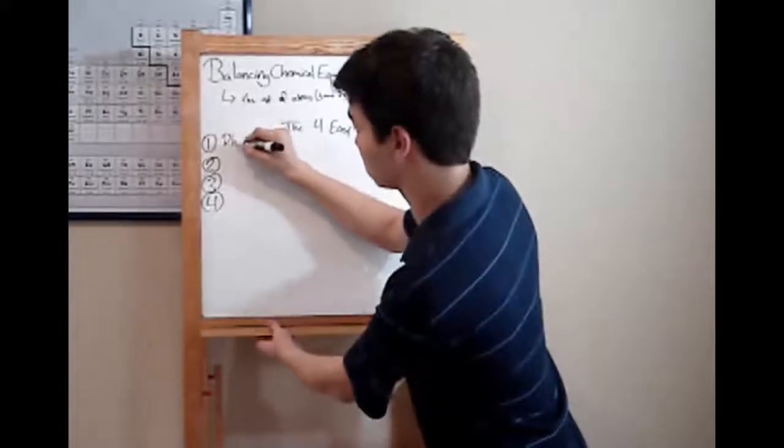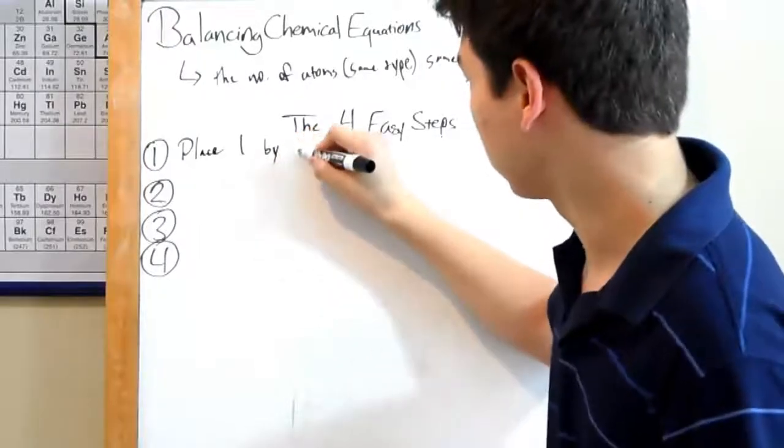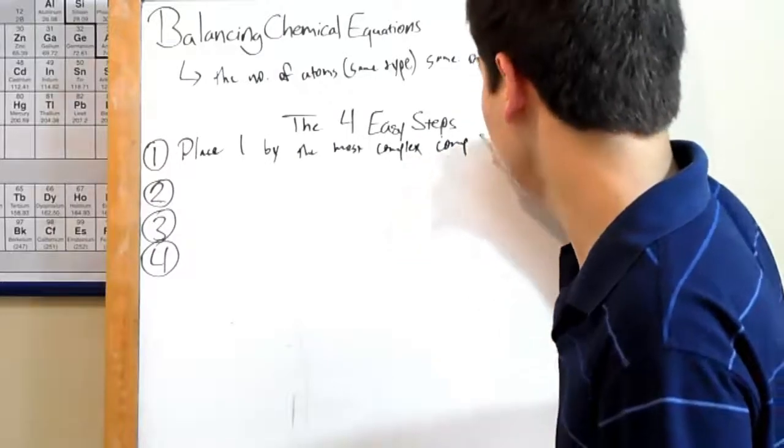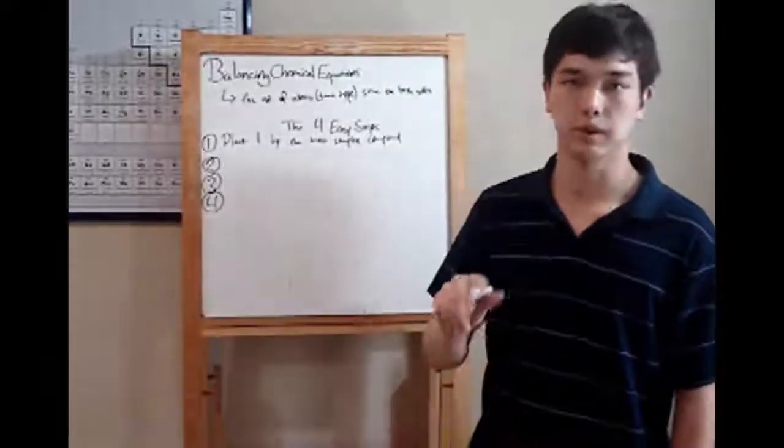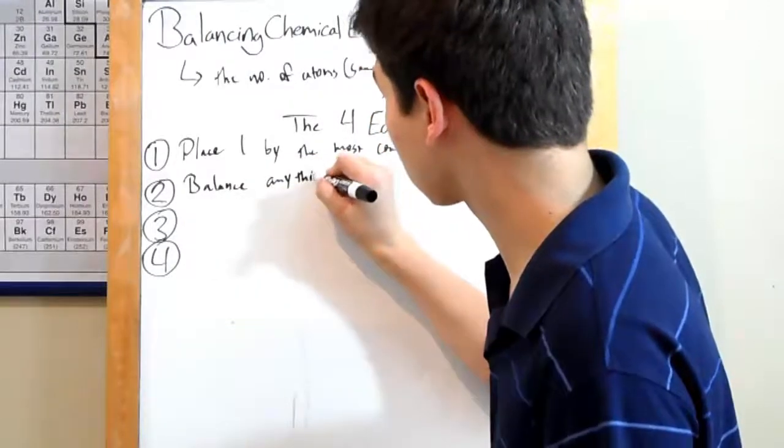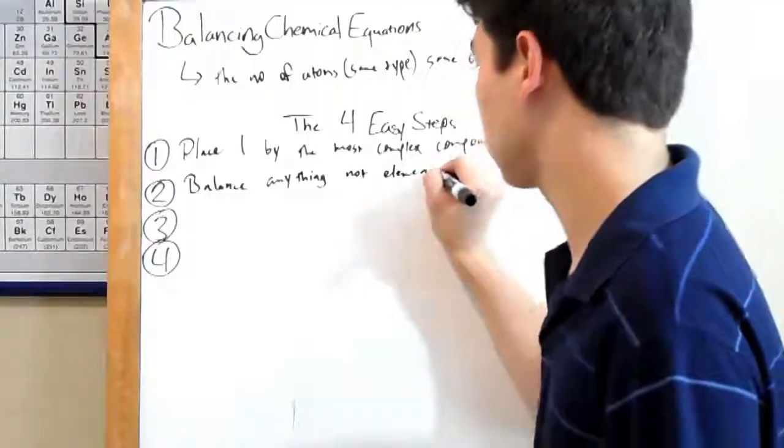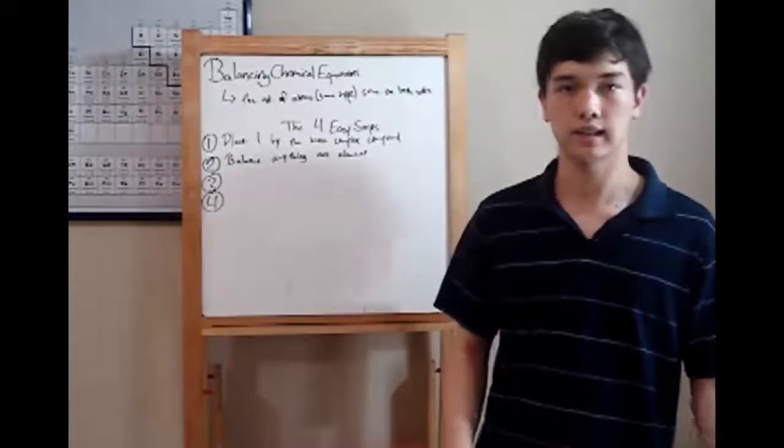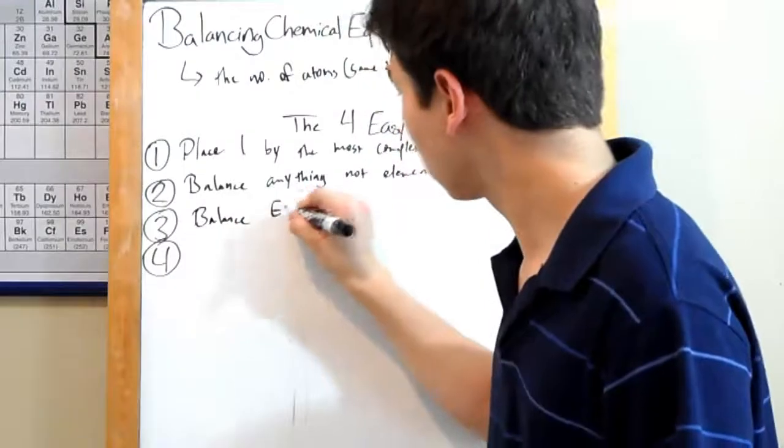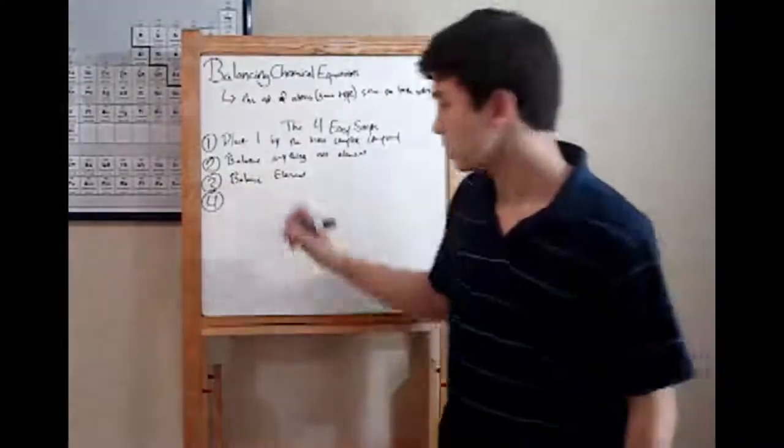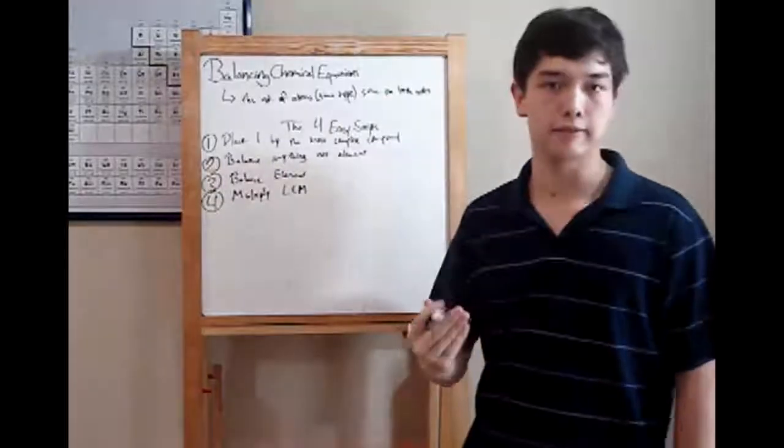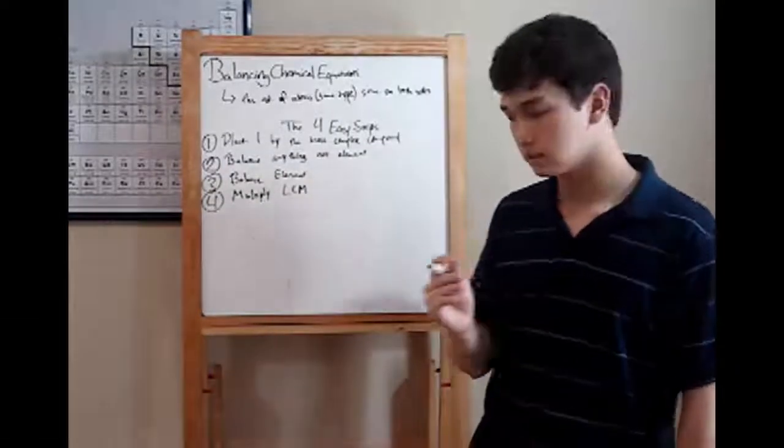There are harder ways to do it. Don't do them. First, place a 1 by the most complex compound. This is pretty easy to judge. There's usually something like Br2CO4 sitting around. That's your complex compound. Put a 1 by it. Next, balance anything not an element. You know what an element is. Anything just by itself, like lithium by itself, or O2, since it's diatomic. After that, balance the elements. And the fourth step doesn't always come into play, but you need to multiply by the lowest common multiple. What this does is it gets rid of the fractions that might occur. If they don't, don't worry about it. Let's move on to some examples.